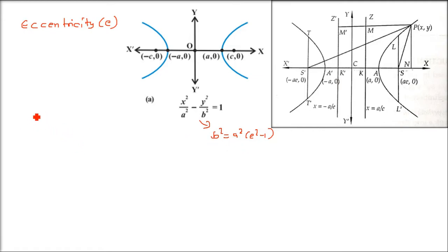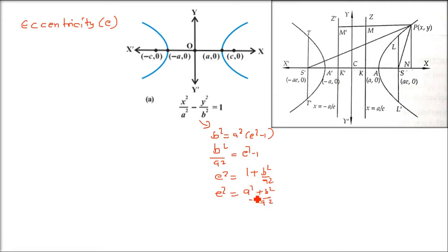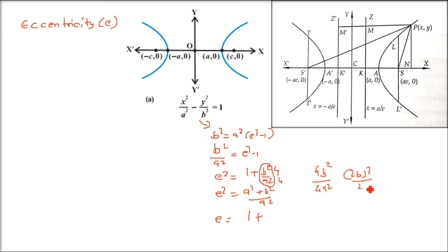If we are interested in e², rearranging: e² minus 1 equals b² over a², so e² equals 1 plus b² over a². Writing it out: e² equals (4b²)/(4a²), which is (2b)² over (2a)². Here 2b is the conjugate axis and 2a is the transverse axis. So the eccentricity equals the square root of 1 plus (conjugate axis)² divided by (transverse axis)².